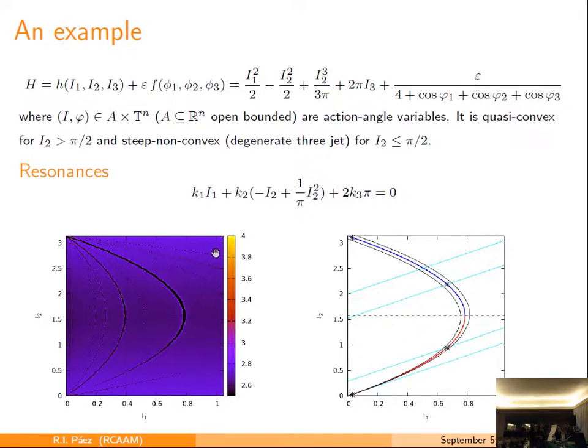You will see that of the three actions, the third one play no role, because of the linear dependence. This is an FLI map. It's like the one that I showed before, but in a Hamiltonian system, not in a mapping, and you can see that that resonance has this shape. Okay, we want to study what happened with diffusion.